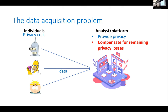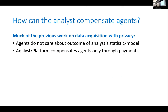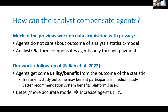Even with differential privacy, users still incur privacy losses as a function of which epsilon you use in your mechanism, so we have to compensate users for those losses. A lot of prior work on data acquisition with differential privacy models users as agents who don't care about the outcome of the statistic or model — so the only way to compensate them is through payments. What's new in this paper — and also explored in follow-up work by Fallah et al. — is that agents actually get some benefit and utility from joining a platform from the outcome of the statistic.